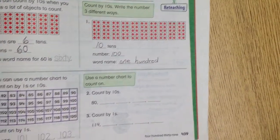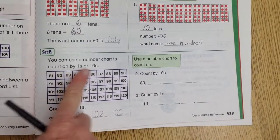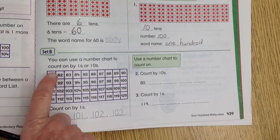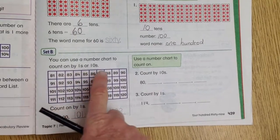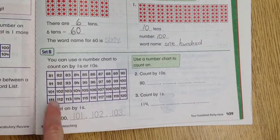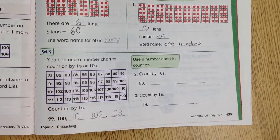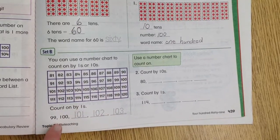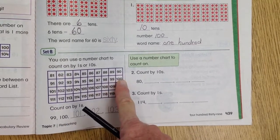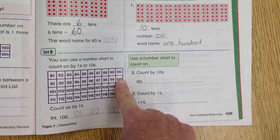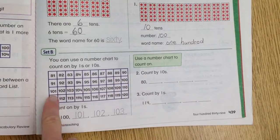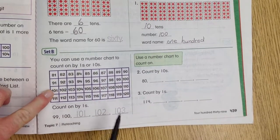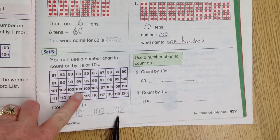All right, set B is reviewing using the 100 frame, or in their case, the 120 frame, remembering that if we go across, we're counting by ones, and if we go up and down, we're counting by tens. Down here it says count on by ones, so we're going to go across. They have us starting at 99 to 100, and then we have to remember that when we come to the end of the line, it's just like when we're writing, we come down to the left on the next line. So then we would have 101, 102, 103.